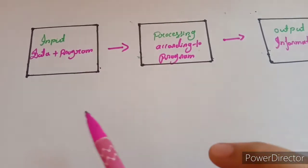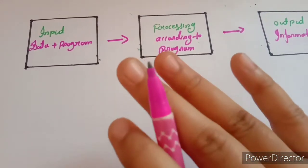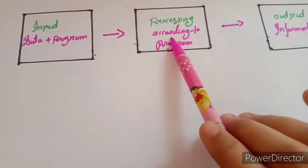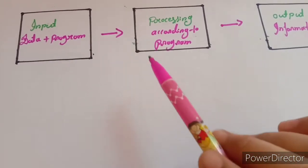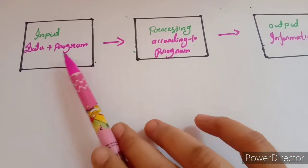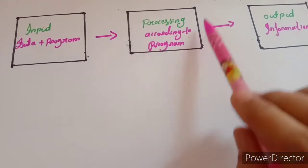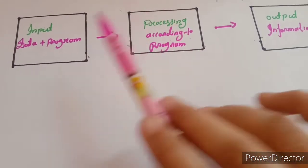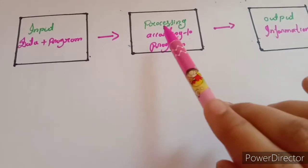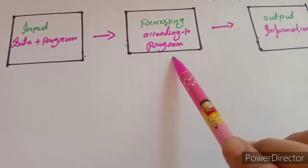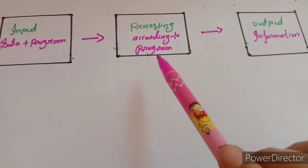A program is a set of instructions or set of software. Processing: when the computer works on data according to instructions, it is called processing. Input is data plus program entered into the system, and working on that data according to the program is called processing.